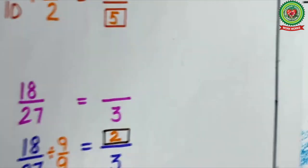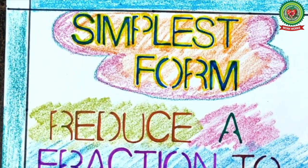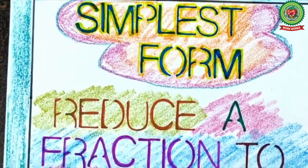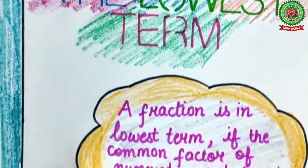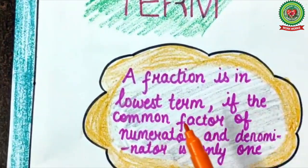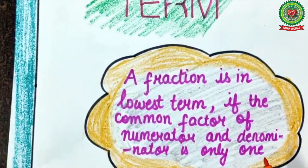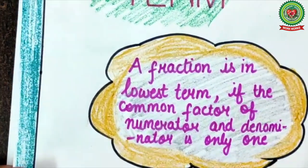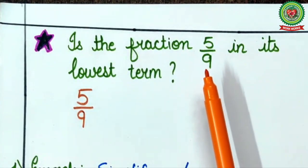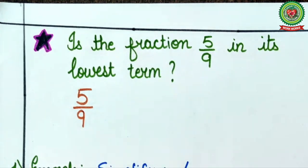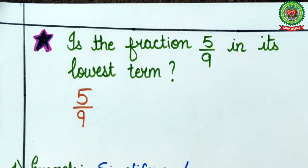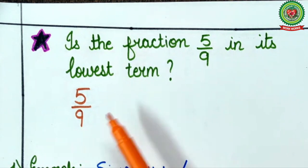Now let's move to the next concept: simplest form. Simplest form means reducing a fraction to its lowest term. A fraction is in its lowest term if the common factor of the numerator and denominator is only 1. For example, is 5 upon 9 in its lowest term? Can 5 and 9 come in any common table? No — they come only in table of 1, meaning the common factor is only 1. Therefore 5 upon 9 is already in its lowest term.